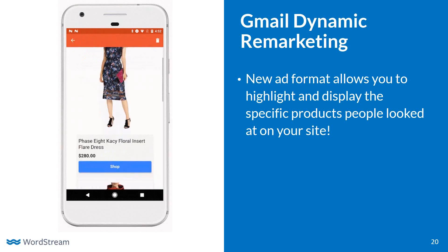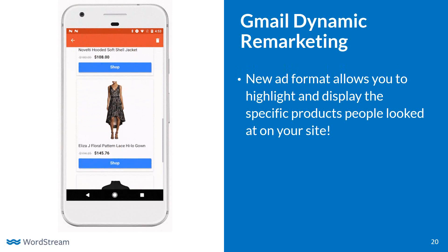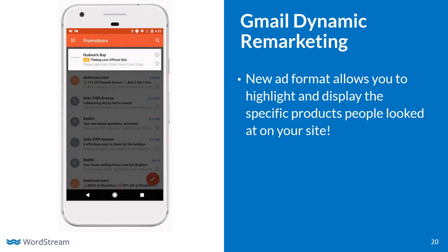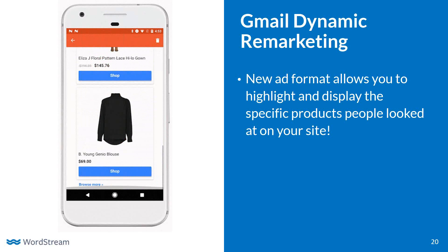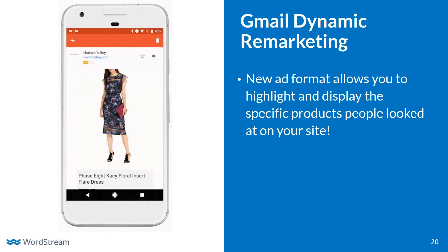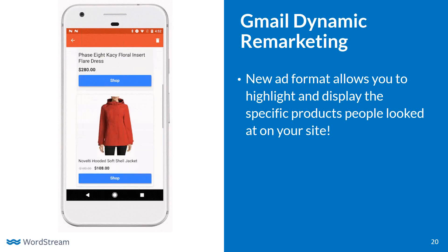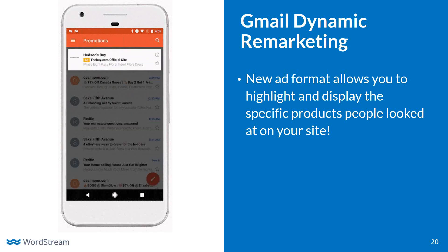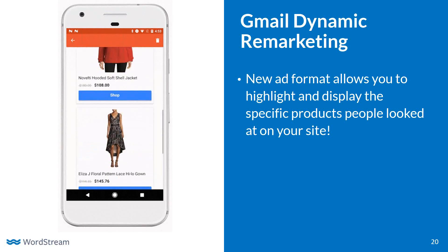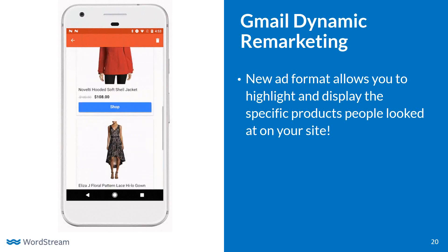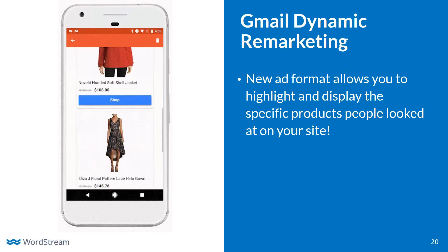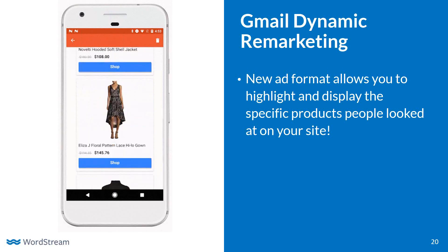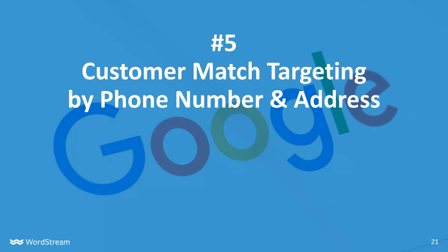Previously, even with remarketing, I would serve everyone the same generic ad to come back to my site — not specifically based on what they were looking at. This new Gmail Dynamic Remarketing opens up the opportunity to follow up with a Gmail ad that includes the specific products a user was just looking at on my site. So rather than just reminding someone to return, I can show them the exact dresses or shoes or products they were browsing, specifically to re-engage them and help them complete their purchase.